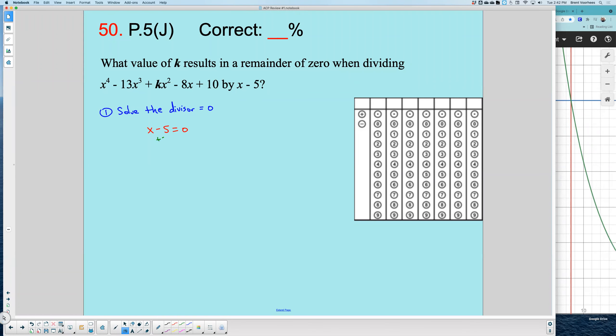And if I solve that for x, I would just need to add 5 to both sides. And so I have now x equals 5.